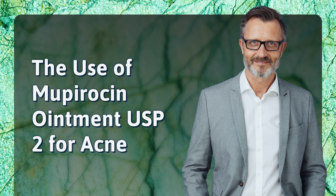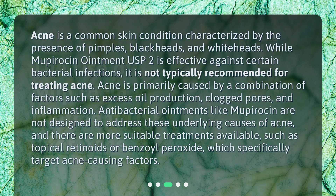The use of Mupiracin Ointment USP2 for acne: Acne is a common skin condition characterized by the presence of pimples, blackheads, and whiteheads. While Mupiracin Ointment USP2 is effective against certain bacterial infections, it is not typically recommended for treating acne. Acne is primarily caused by a combination of factors such as excess oil production, clogged pores, and inflammation. Antibacterial ointments like Mupiracin are not designed to address these underlying causes of acne, and there are more suitable treatments available, such as topical retinoids or benzoyl peroxide, which specifically target acne-causing factors.